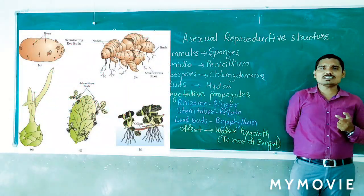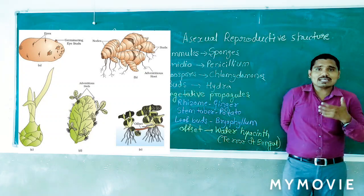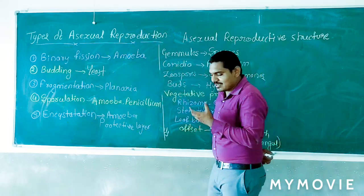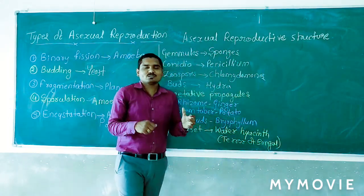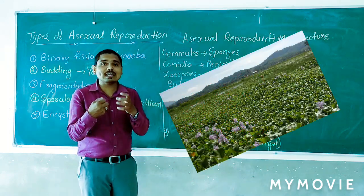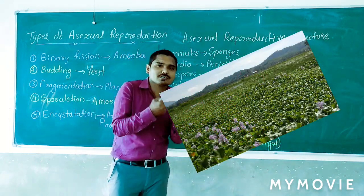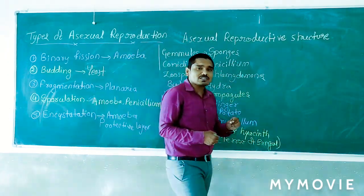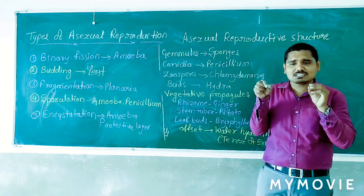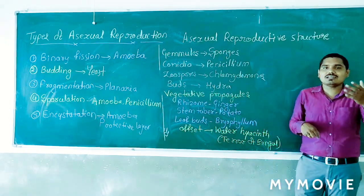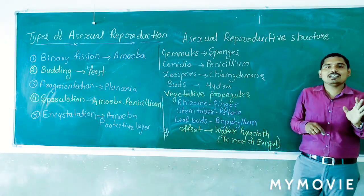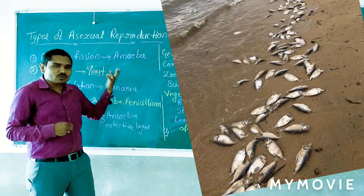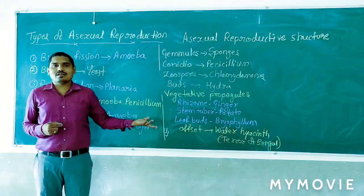Water hyacinth is commonly called the 'Terror of Bengal.' It is called so because due to its asexual reproductive capacity, within a week it can invade a large area. While growing inside the water, it drains maximum oxygen. If it drains maximum oxygen, that oxygen quantity is automatically reduced inside the water body, which leads to a decline in fish populations and can even cause fish mortality, and some other aquatic animals may also die.